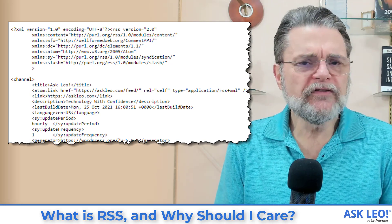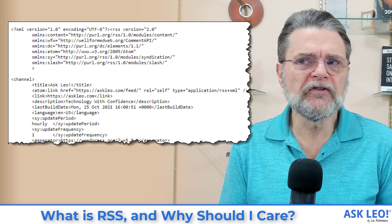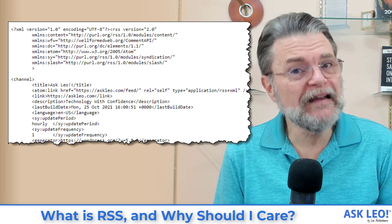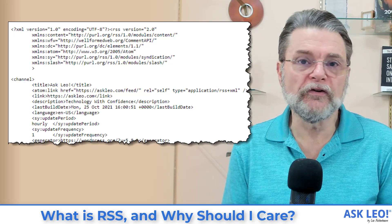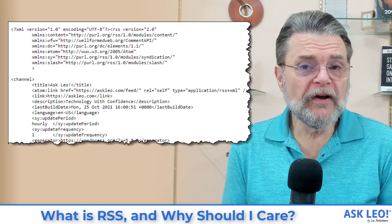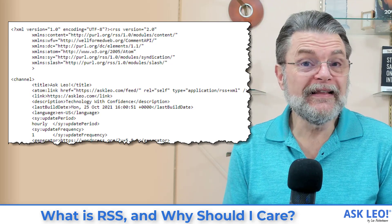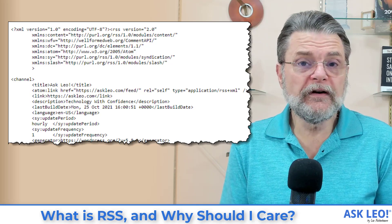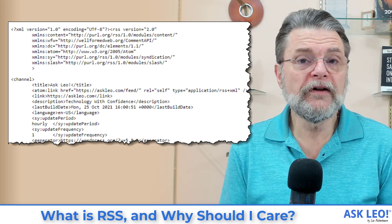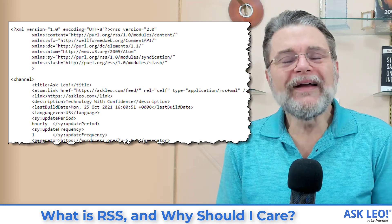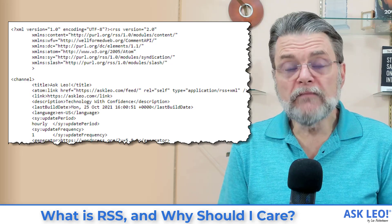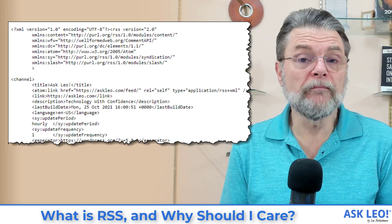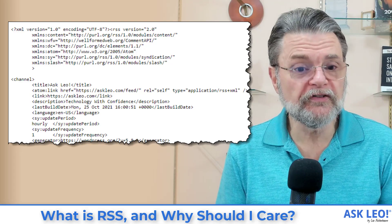The feed also contains information about each of the most recent articles. In Ask Leo's case, I think it's the 10 most recent articles. There's actually no definition of how many recent articles should be included. I know of some sites that include only the single most recent article, and I know of others that include 20, 30, 50 or more. The point is that these are the most recent articles, with the most recent one listed first.